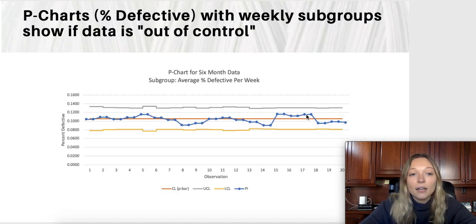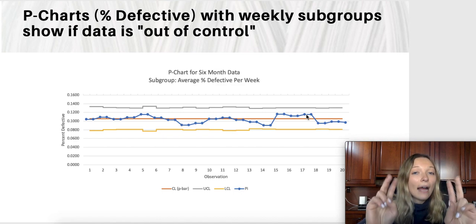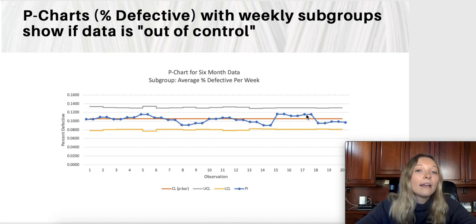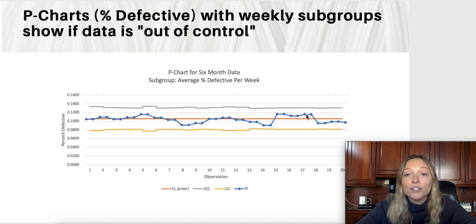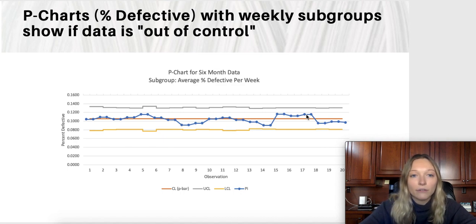P charts are a way to analyze whether a group of data is in control or out of control. If the data is considered out of control, it is an indicator that you may want to use the drill down analysis to find out what sources of error are causing it to be out of control.